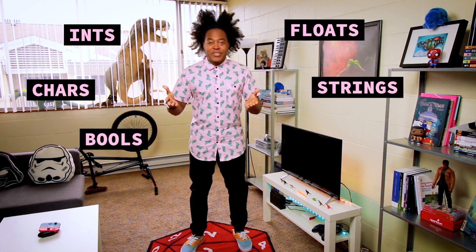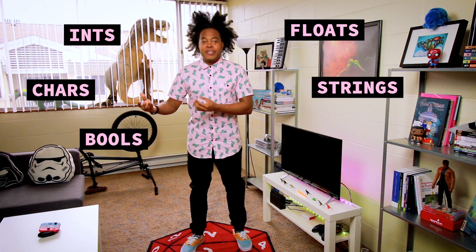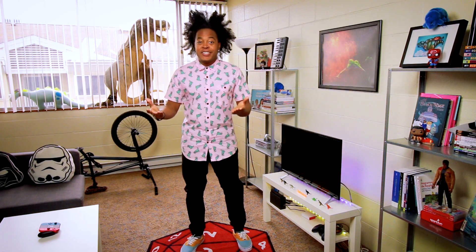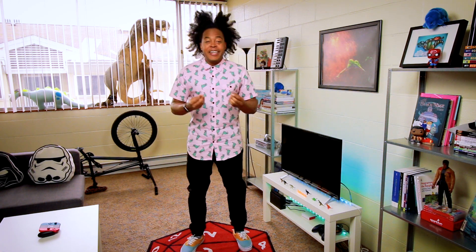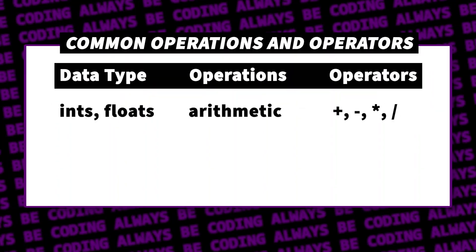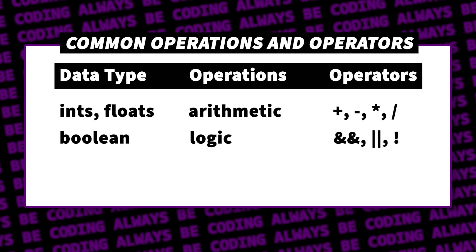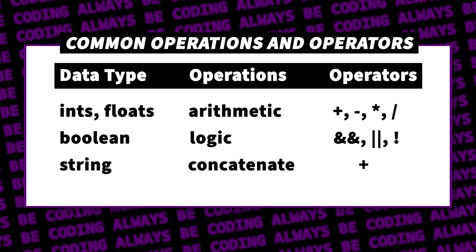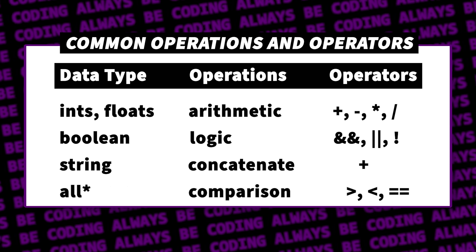Like a label maker keeping info organized, data can't go into containers without a type. Variables come in various flavors: ints, floats, chars, strings, booleans — these are just a few of the types you'll use. Data types are also involved in unique operations: ints and floats can be used in math operations like addition, subtraction, multiplication, and division. Booleans can be used in logical operations using the operators and, or, and not. Strings can be used in string operations such as concatenation, which combines more than one string. Variables of the same data type can be compared using comparison operators: greater than, less than, and equals.